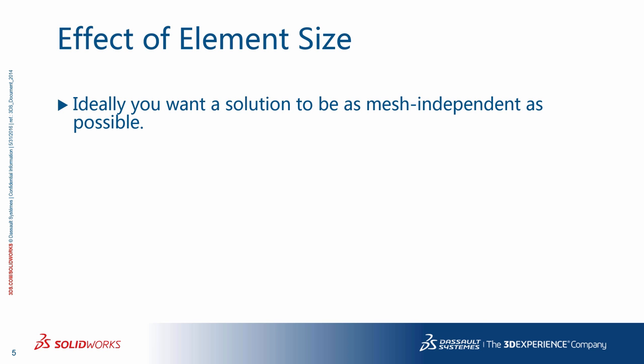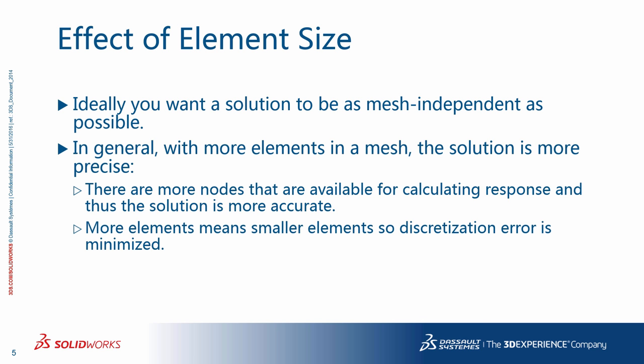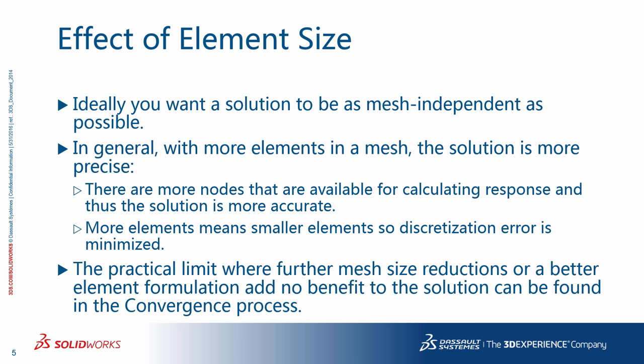Let's talk about the effect of element size. Ideally, you want the solution to be as mesh-independent as possible, because mesh is mathematics and not physics. In general, with more elements in a mesh, the solution is more precise — there are more nodes available for calculating the response, the solution is more accurate, and discretization error is minimized. The practical limit where further mesh size reductions or a better element formulation add no benefit to the solution can be found in the process we call convergence.